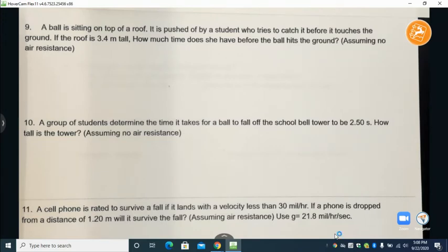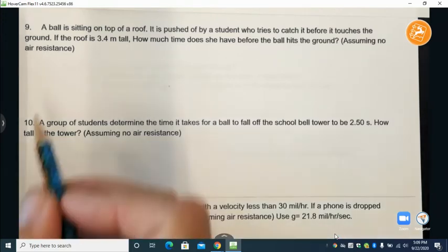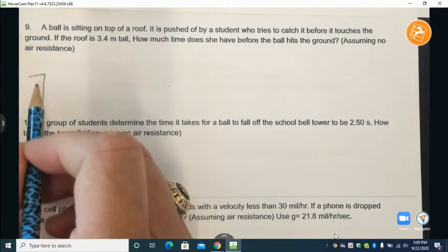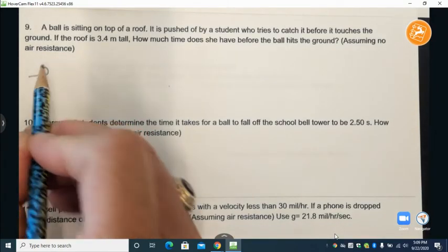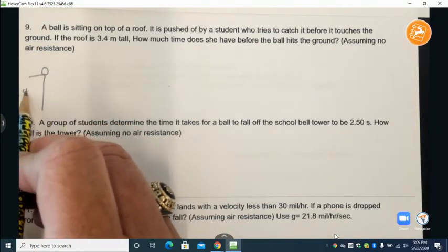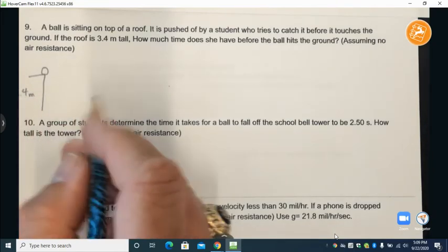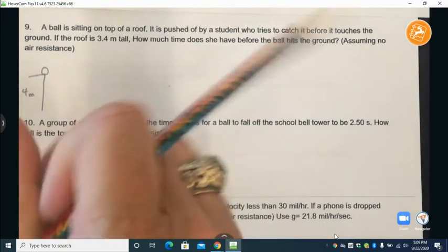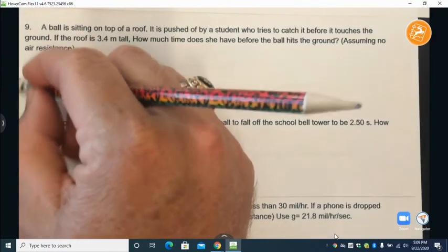The roof is 3.4 meters tall. So the idea is there's this building and our ball was stuck on top of that building. That building is 3.4 meters tall and we've used some object to push that off of the building.